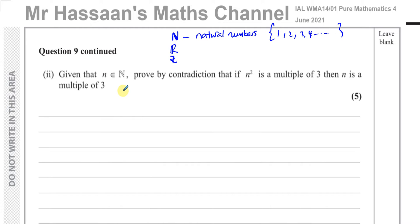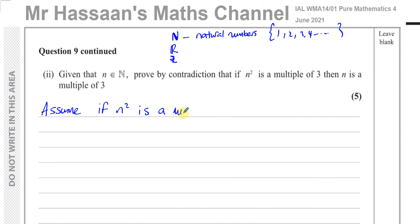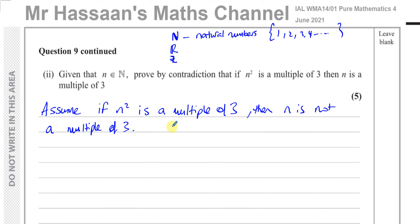We're talking about the natural numbers — the positive integers starting from one. We need to prove by contradiction that if n² is a multiple of three, then n is a multiple of three. The first thing we do is contradict the statement: we assume the opposite, i.e. if n² is a multiple of three, then n is NOT a multiple of three.